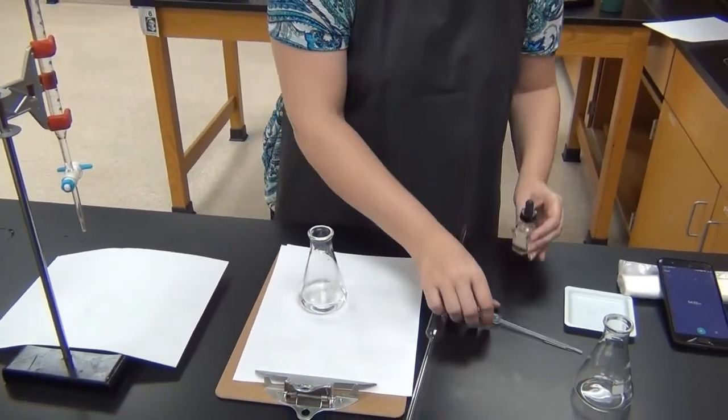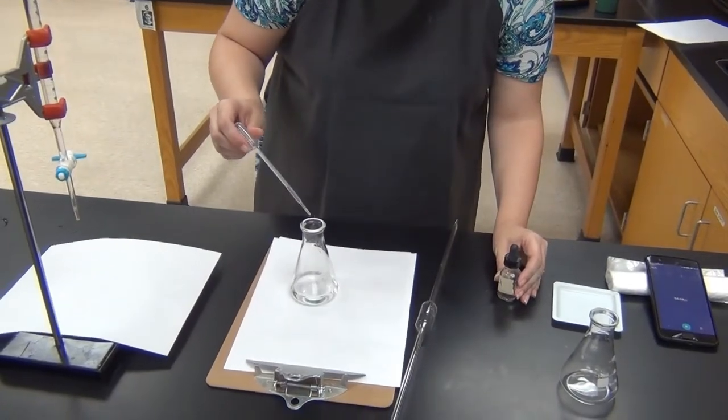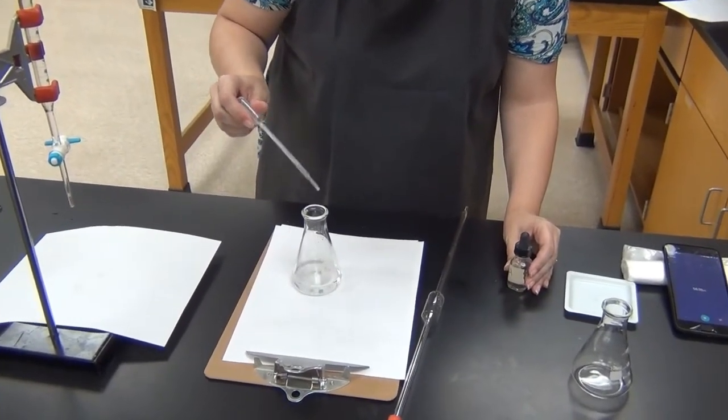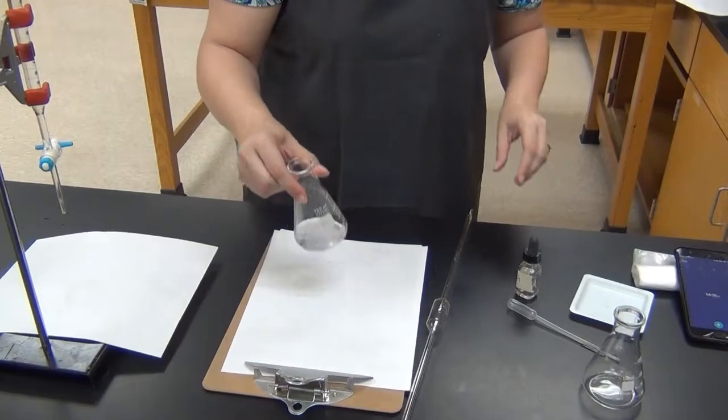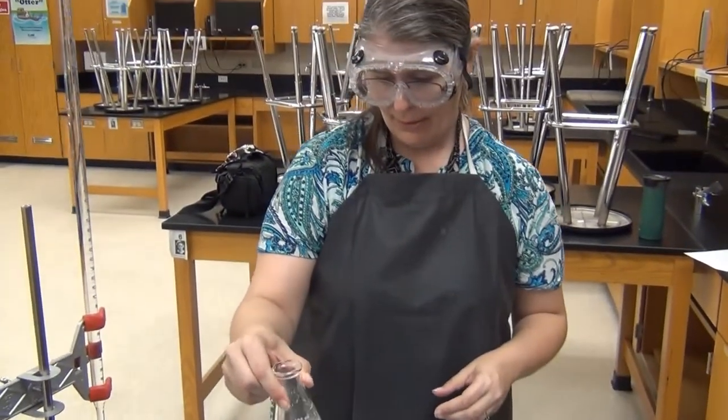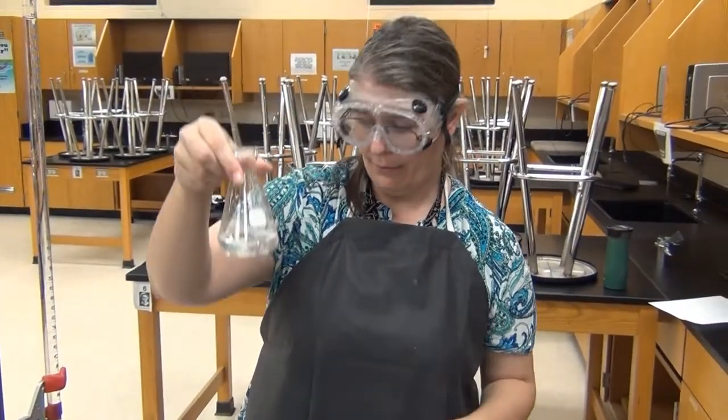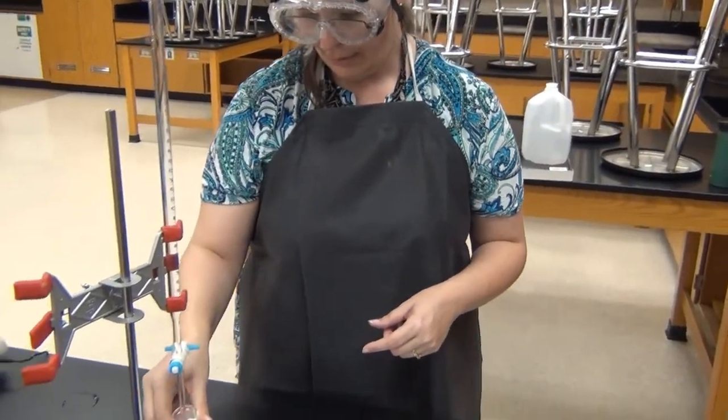As before, I need to make sure I put in the indicator, just a couple of drops. Just two or three drops is plenty. Swirl it around so that it's all mixed in, and now I have my starting clear colorless sample.